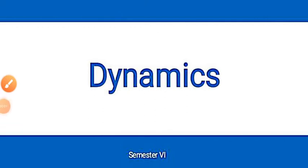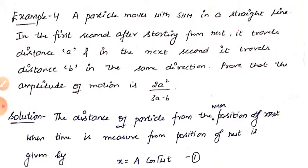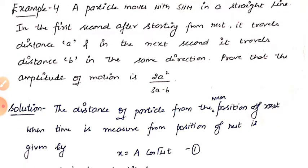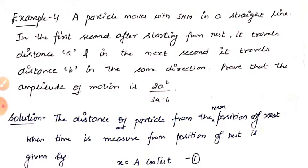Hello students. Last lecture में हम simple harmonic motion पे based examples कर रहे थे, उसी को continue करेगे हम। Three examples तक हम ने कर लिये थे। Fourth example is: a particle moves with simple harmonic motion in a straight line. In the first second after starting from rest, it travels distance A, and in the next second it travels distance B in the same direction. Prove that amplitude of motion is 2a² over (3a minus b).